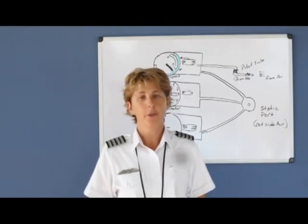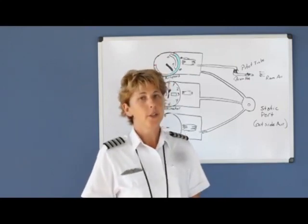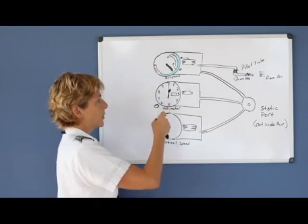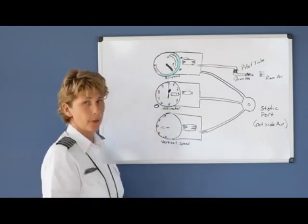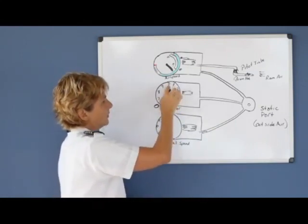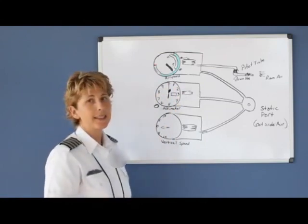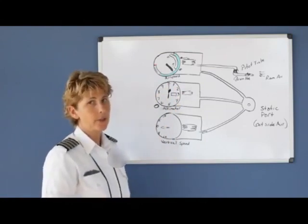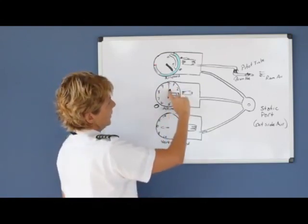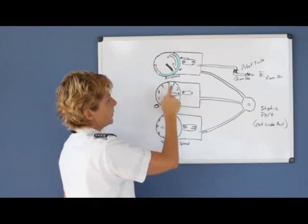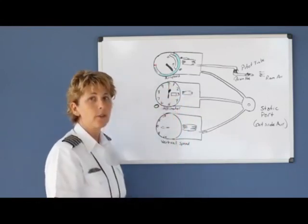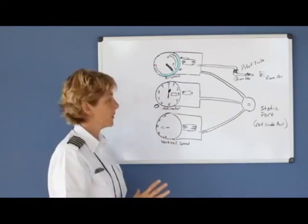Now we're going to discuss in further detail your altimeter. Things to note about your altimeter: first of all, there are three needles. The short, fat needle is used to define tens of thousands of feet. In this picture, the needle is halfway between 0 and 10,000, so it indicates that you'd be roughly at 5,000 feet.